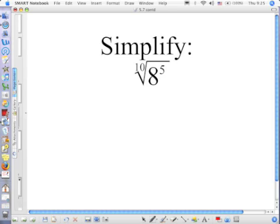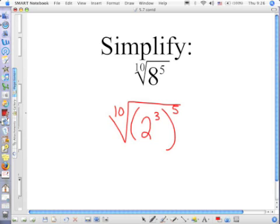We want to get this as simple as we can. Is eight a perfect something? It's a perfect cube, is it not? So I have the tenth root of eight to the fifth power. But how can I write eight instead of eight? Two cubed.